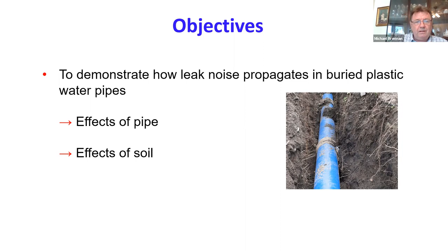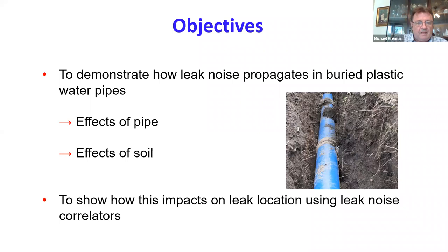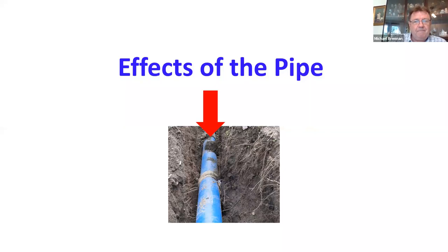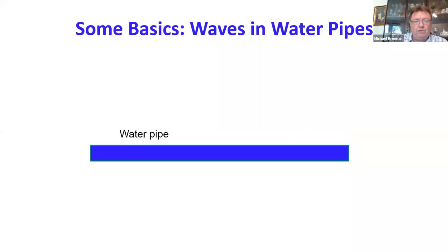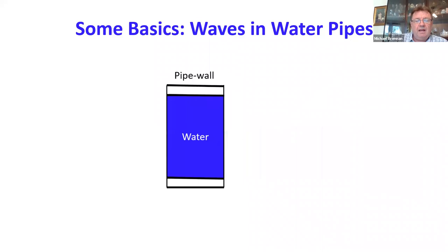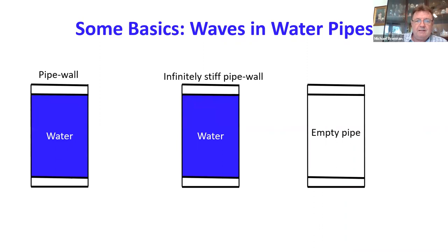It's to demonstrate how leak noise propagates in plastic water pipes and to look at the effects of the pipe and the effects of the soil. Let us take the first one — the effects of the pipe. We will remove the soil and just look at the pipe. I want to look at two extreme cases, because these will help us understand what comes next.